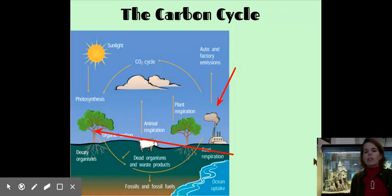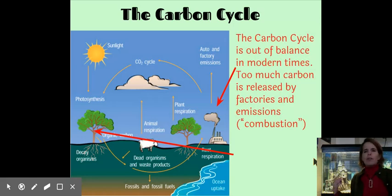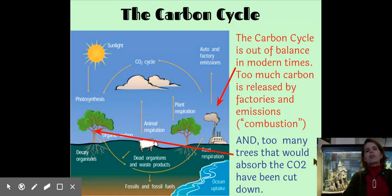Combustion happens in a volcano. It happens naturally in a forest fire, but it also happens unnaturally when we're burning things for our cars or for factories or what have you. So currently, the carbon cycle on our planet is extremely out of balance. There's too much carbon being released by factories in emissions, and we refer to that as combustion. Any time you burn anything, light a match, that's combustion, and combustion releases carbon dioxide into the air.